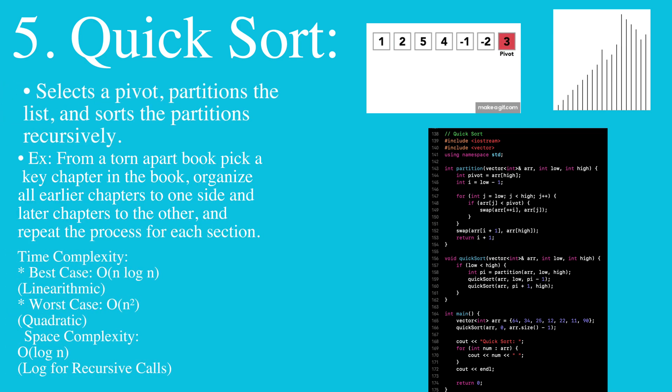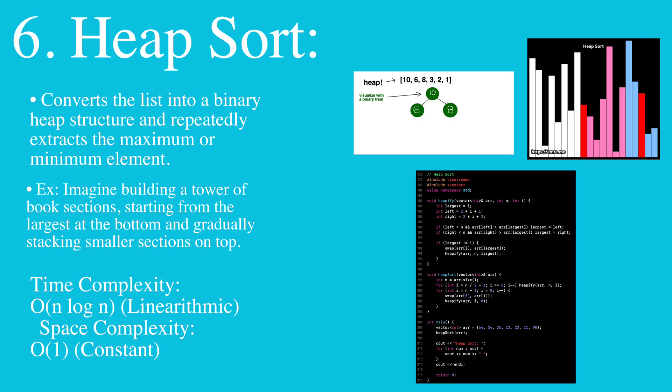Then we have quicksort, where we select a pivot, partition the list, and sort it recursively. Then we have heapsort, where we convert the list into a binary heap structure and repeatedly extract the maximum or minimum element.